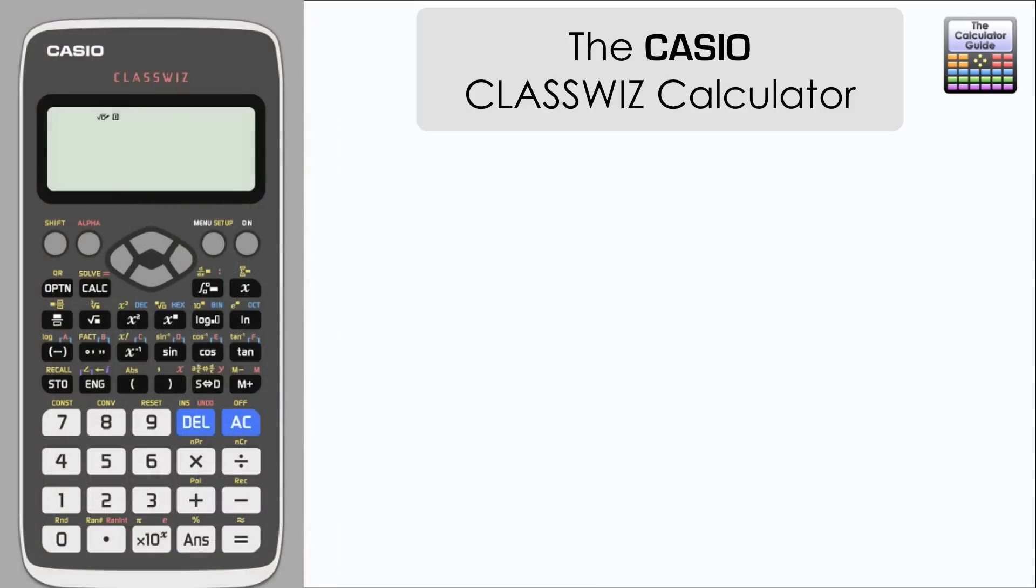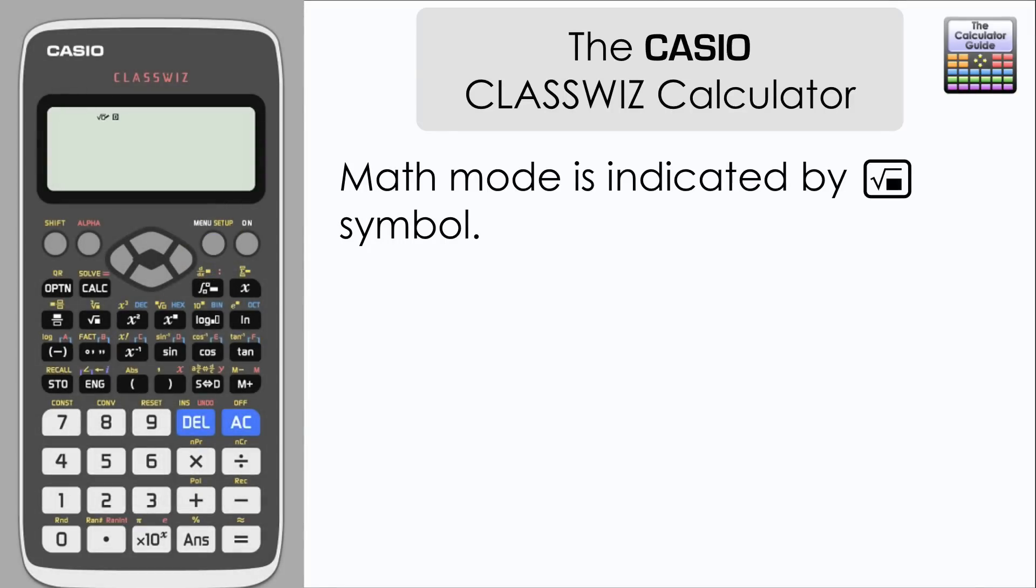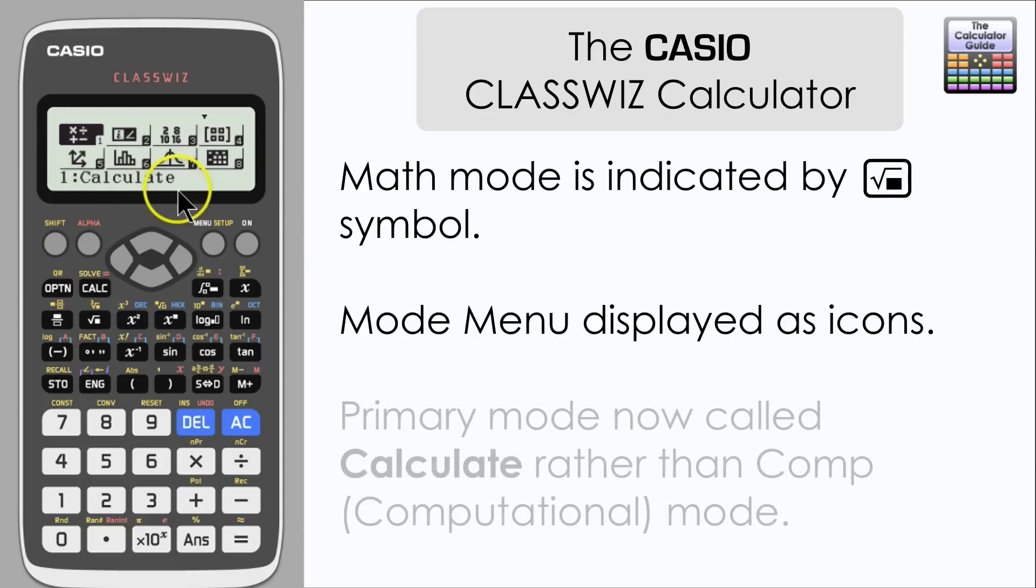I'm going to switch to the emulator now, perhaps a little bit more cartoon-esque than previous versions of the emulator, but it is still the same calculator. Math mode is now indicated by a square root or a radical symbol with a little pen by it at the top, so it lets you know that you're in math input and output.